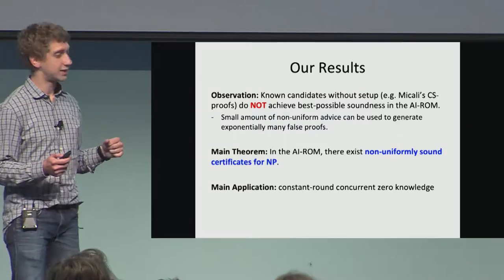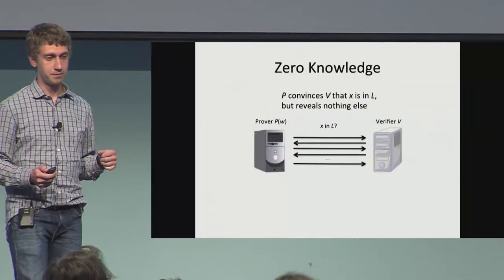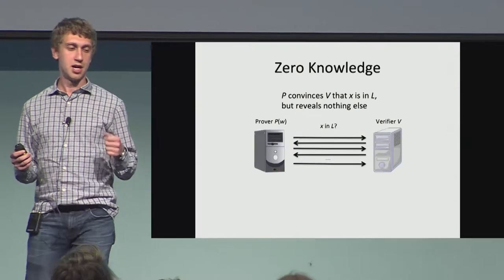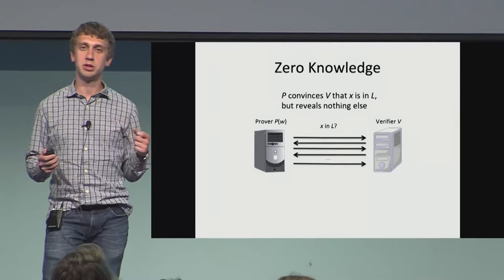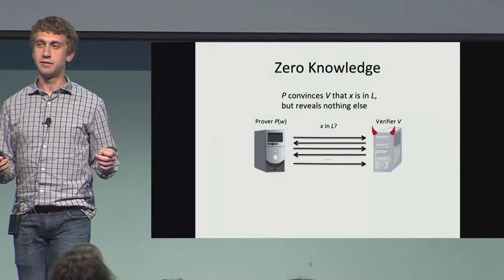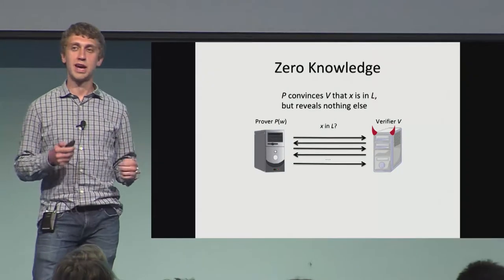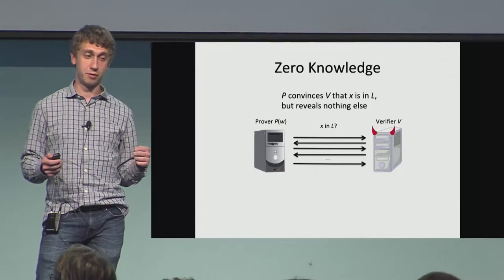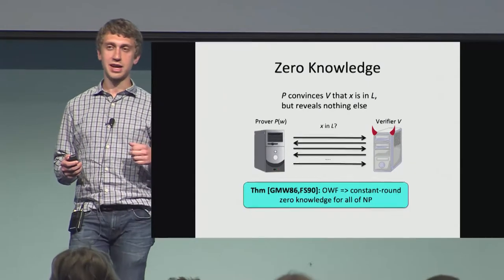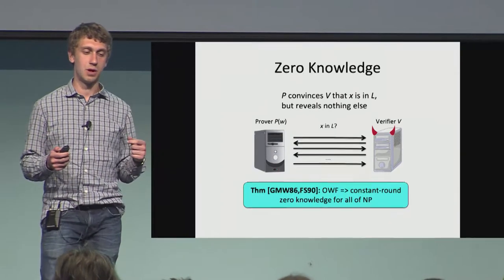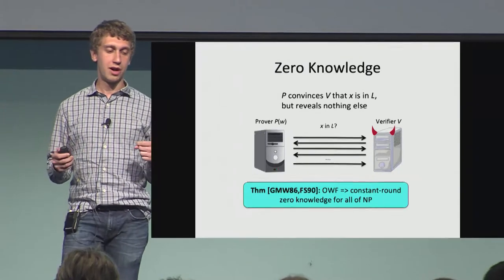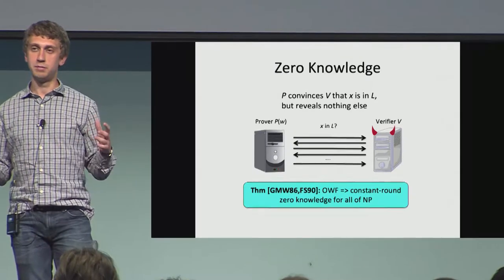For the next part, I'll talk about the application to zero knowledge. In zero knowledge, you have two interacting parties — a prover and a verifier — and the prover should be able to convince the verifier that a statement is in the language while revealing nothing else. Even if the verifier is adversarial and trying to extract information from the prover, it should fail. The situation with zero knowledge has been well known from a theoretical perspective for a long time: from one-way functions alone, we've known how to construct constant-round zero knowledge arguments for all of NP for almost 30 years.